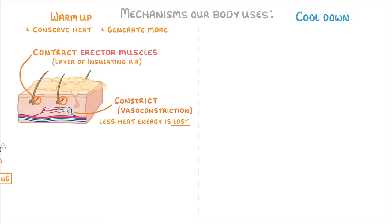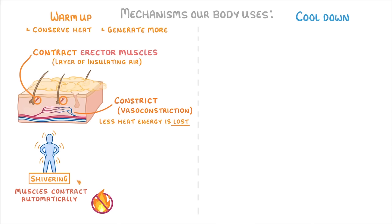To generate more body heat, we also shiver, which is where our muscles contract automatically. Muscle contraction by itself doesn't actually directly produce heat, but it does require lots of energy from respiration. And all the chemical reactions that this involves result in lots of heat energy being released as waste, which ends up warming us up.